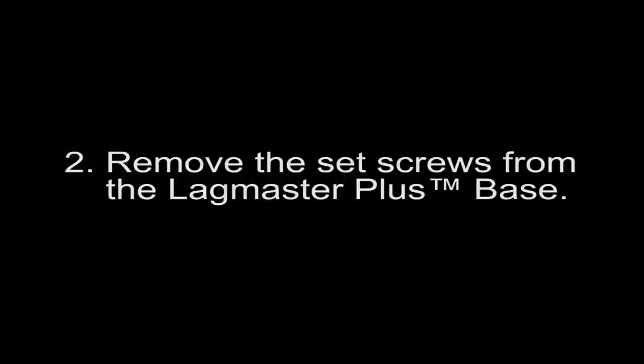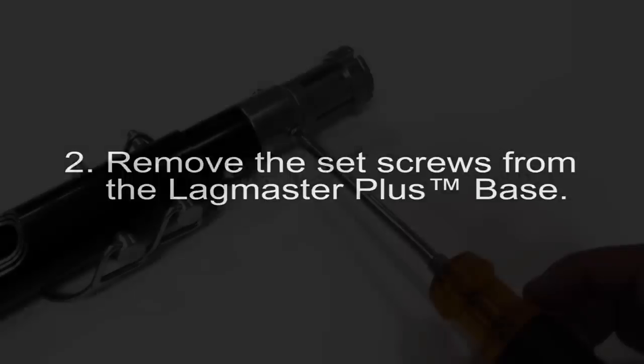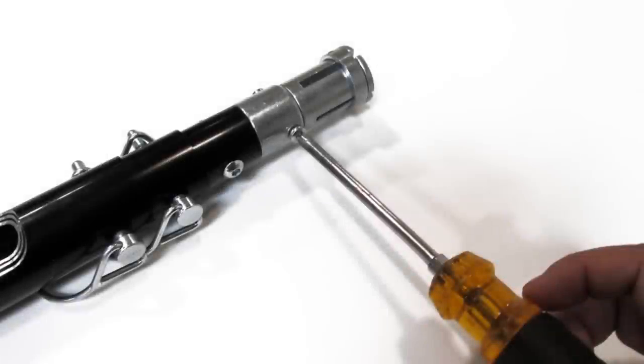Second, remove the set screws from the base of the Lagmaster Plus pole tool. Third, remove the wire head.